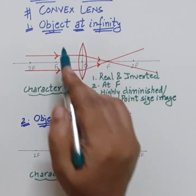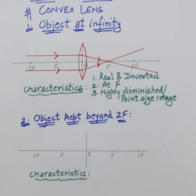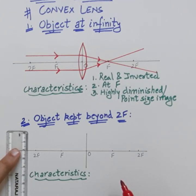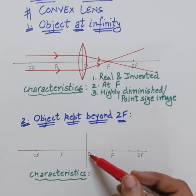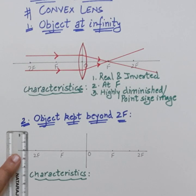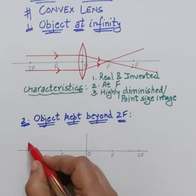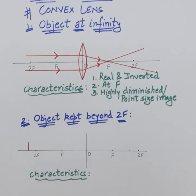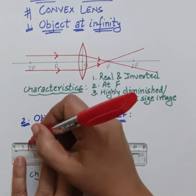For the second position, the object is kept beyond 2f — about one centimeter behind 2f. We again draw the principal axis, mark the optical center, and mark f and 2f three centimeters on both sides. Then we place an object about one centimeter behind 2f. Don't put the arrow on the object yet, as it can cause mistakes in the ray diagram.